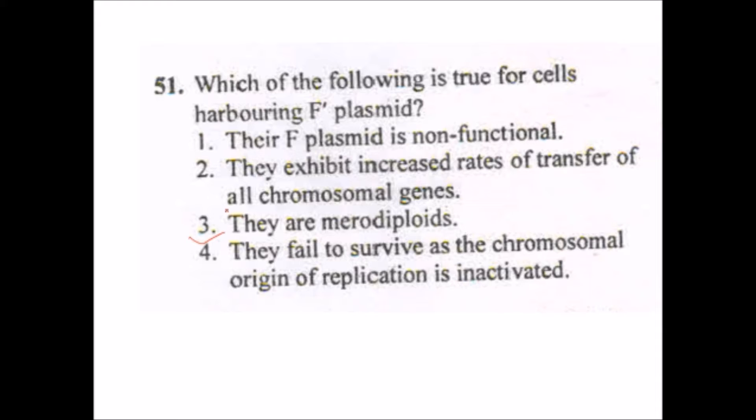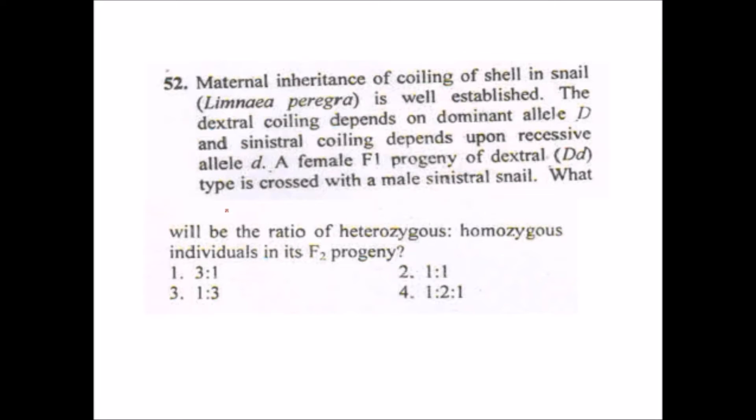Next question: maternal inheritance of coiling of shell in snail is well established. I am not going to read the whole question. I am just focusing on the fact about it. Here the dominant allele is D and the recessive allele is d. It is asking what will be the cross between the hybrid F1 DD along with the male sinistral snail which has the recessive allele dd. Without any doubt this will have one is to one ratio.